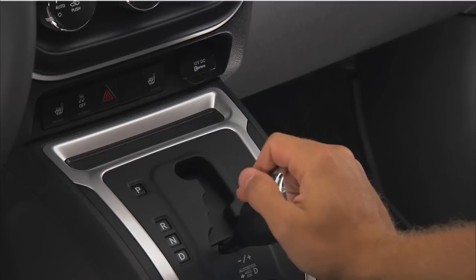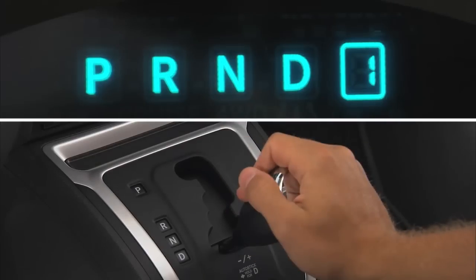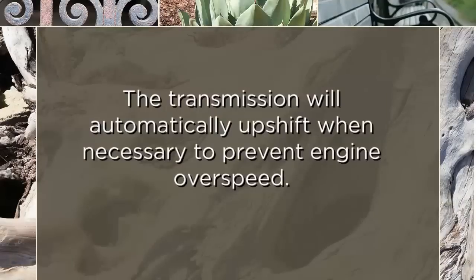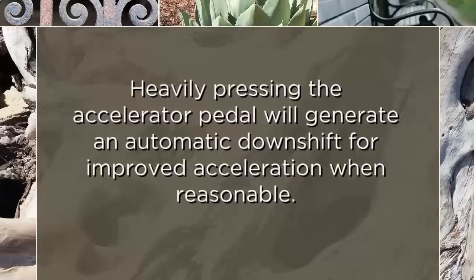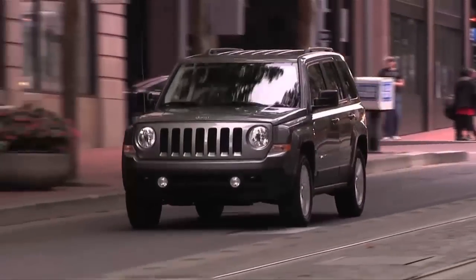When AutoStick is active, the current transmission gear is displayed in the instrument cluster. In AutoStick mode, the transmission will shift up or down when plus or minus is manually selected by the driver, unless an engine lugging or overspeed condition would result. It will remain in the selected gear until another upshift or downshift is chosen. The transmission will automatically upshift when necessary to prevent engine overspeed, and heavily pressing the accelerator pedal will generate an automatic downshift for improved acceleration when reasonable.